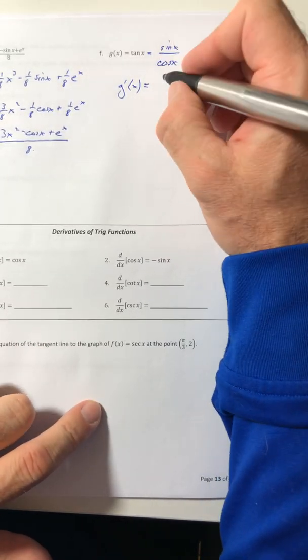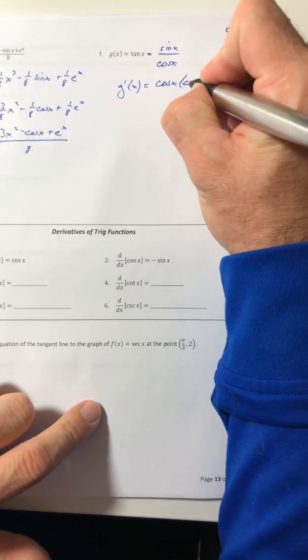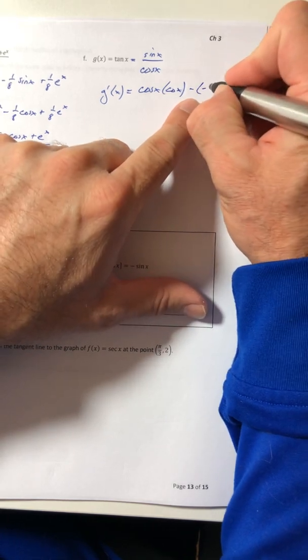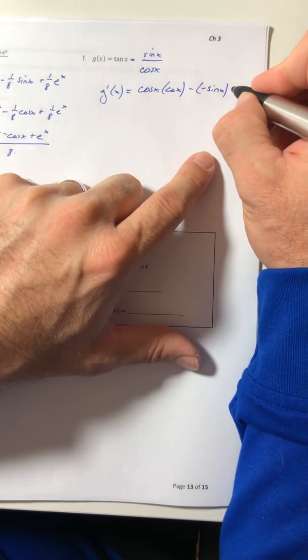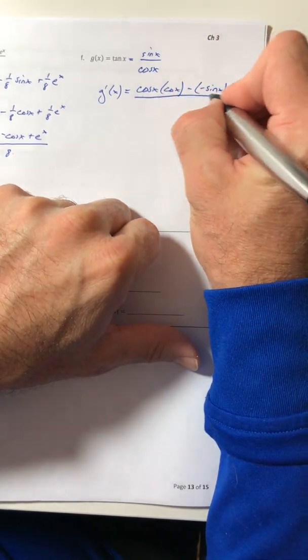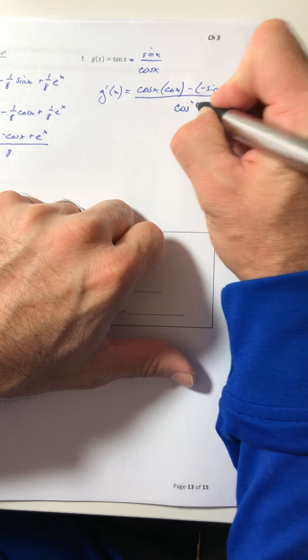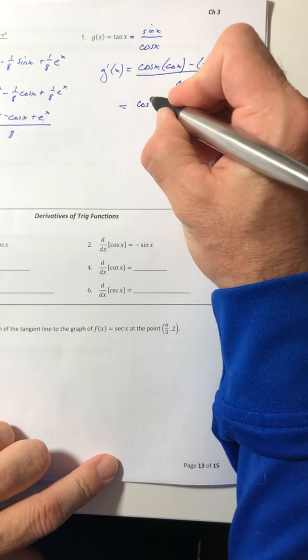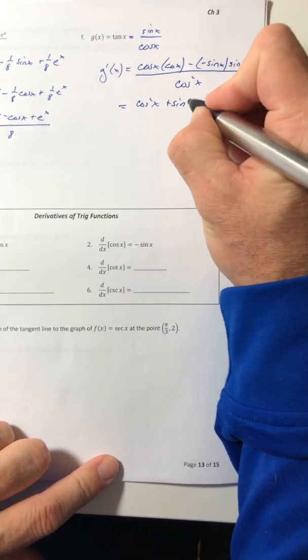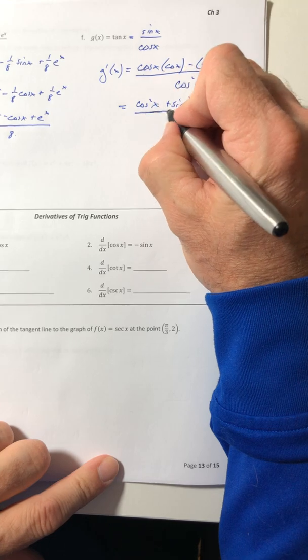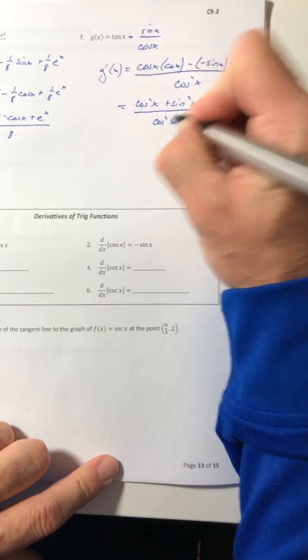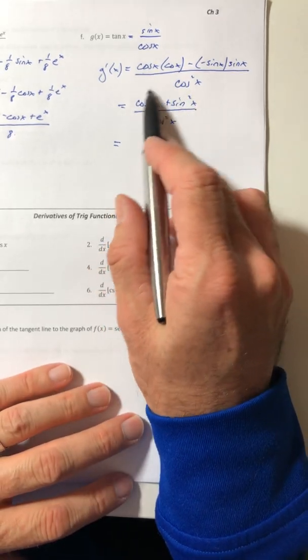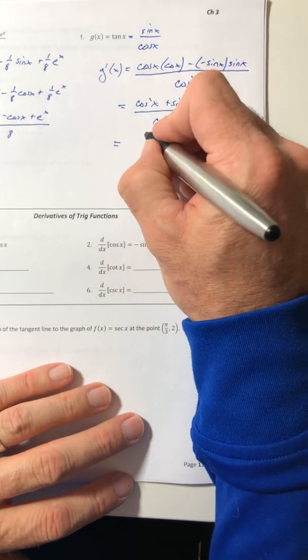Okay, so the derivative of the top times the bottom minus the derivative of the bottom times the top all over the denominator squared. Okay, so let's clean that up. So cosine squared plus sine squared all over cosine squared. Well, my trig identities say I can take that numerator cosine squared plus sine squared. That's really just one.